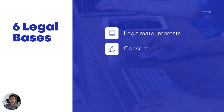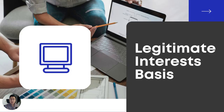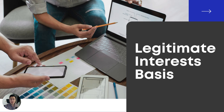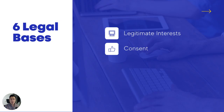That leaves legitimate interest and consent. The legitimate interest basis allows you to collect device data when you are in the process of providing expected product functionality. A good example might be collecting the device's language so you can localize your app. The Irish Data Protection Commission advised TikTok to abandon their plans to use the legitimate interest basis for targeting ads with first-party data. Again, there's no reason to believe regulators will view measurement differently than ad targeting, so the legitimate interest basis can't be used to collect device IDs for MMP attribution either.